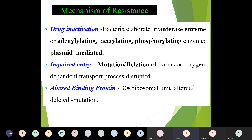The next topic is resistance. These antibiotics can develop either cross-resistance or general resistance. In the case of aminoglycosides, resistance can develop by drug inactivation, impaired entry, or altered binding protein. When there is drug inactivation, the bacteria elaborate transferase enzymes — either adenylating, acylating, or phosphorylating — causing plasmid-mediated resistance. Impaired entry occurs by mutational deletion of porins or disruption of the oxygen-dependent transport process. The altered binding protein involves 30S ribosomal subunit mutation or deletion.